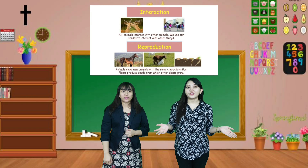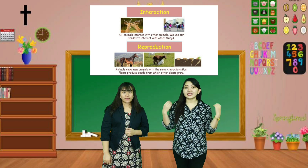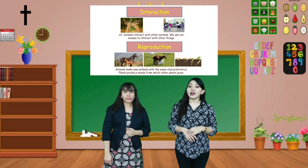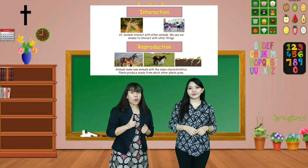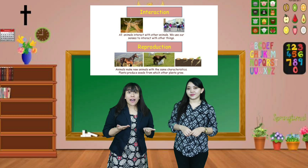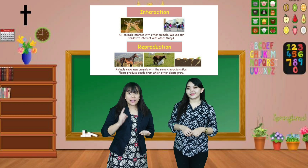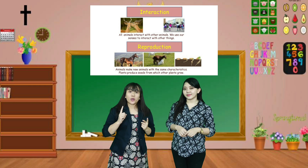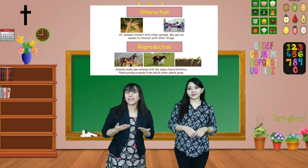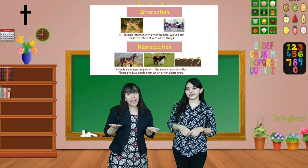All animals interact with other animals with their senses to interact with other things. Animals and plants also have reproduction. For example, animals will produce their young ones, and they have the same characteristics — as well as plants.